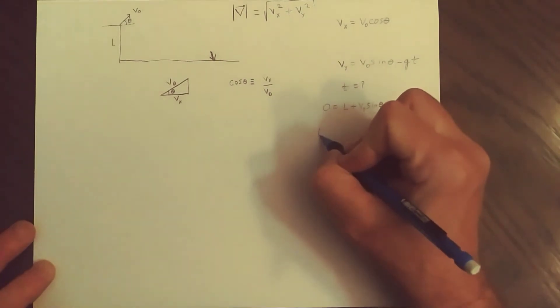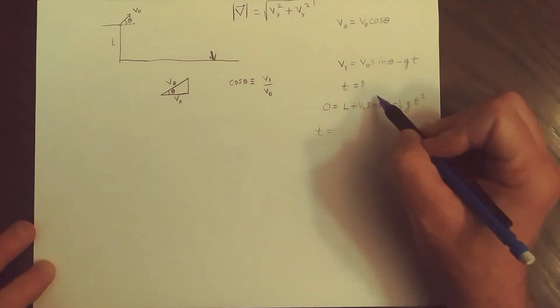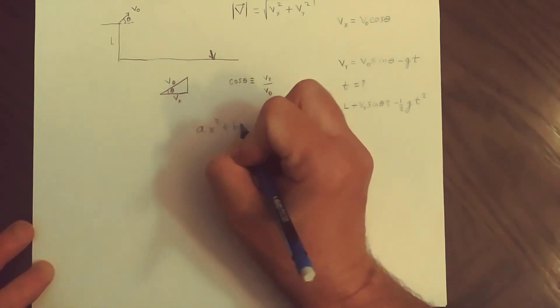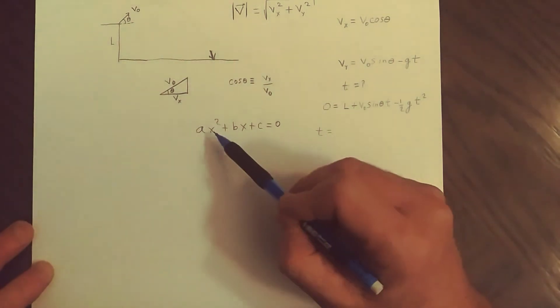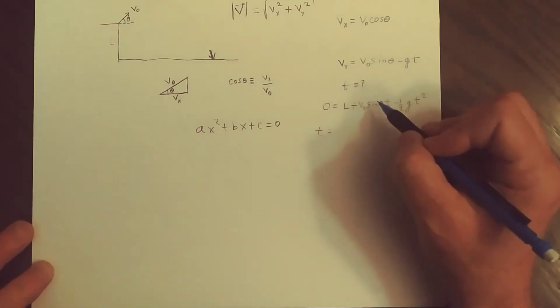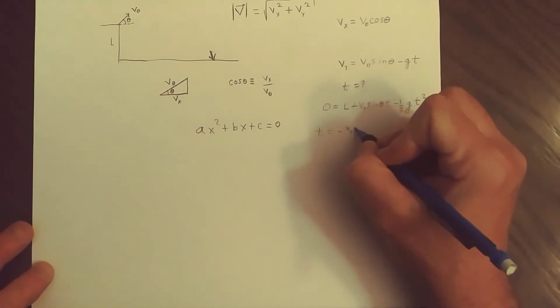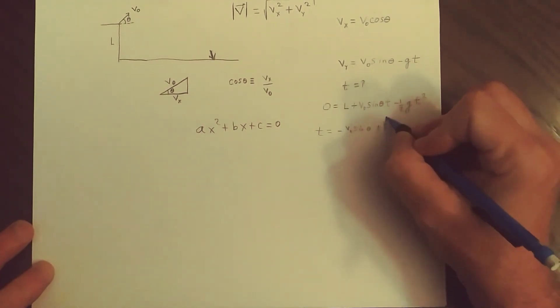So this is how we get the time. T by the quadratic formula is equal to minus B. This is the B term, right? We're thinking of the quadratic equation ax squared plus Bx plus C equals zero. But instead of X it's T here that gets squared. So this term is in front of T just like the B is in front of X. So we want minus B so that's minus V naught sine theta plus or minus V naught sine theta.